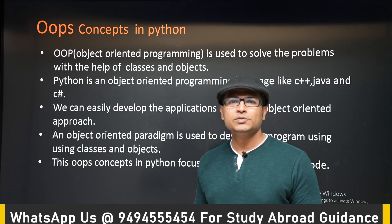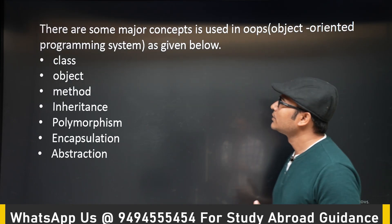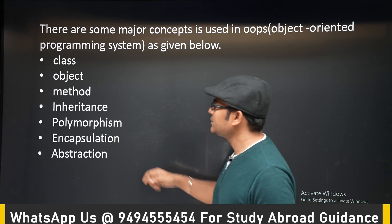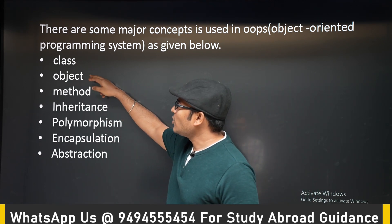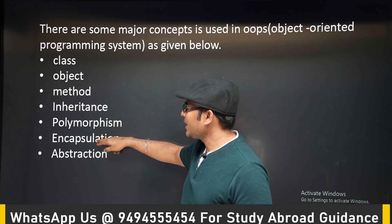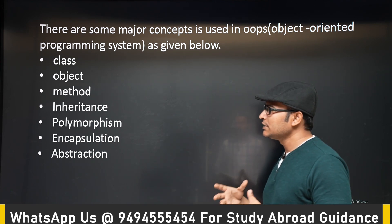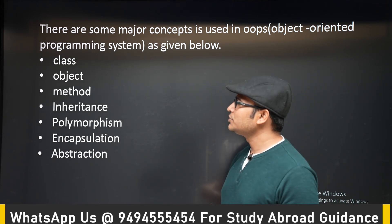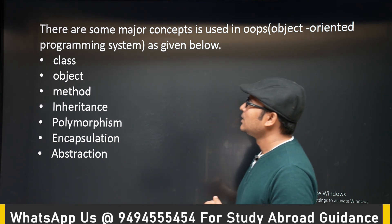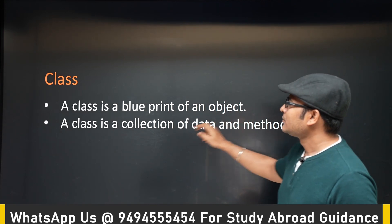To understand object-oriented programming, you have to understand what is a class, what is an object, what is a method, and then inheritance, polymorphism, encapsulation, and abstraction. In this video, I will be going through general definitions of these, and later we will see examples where they are actually used.